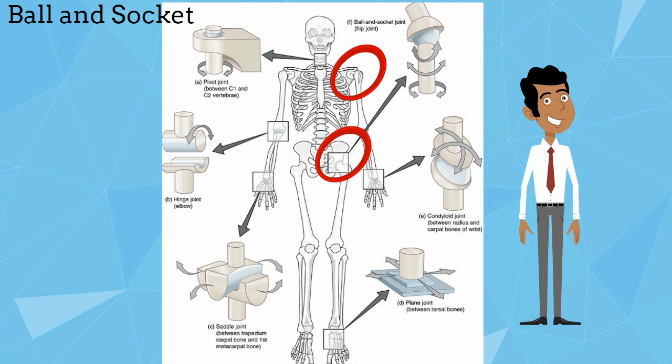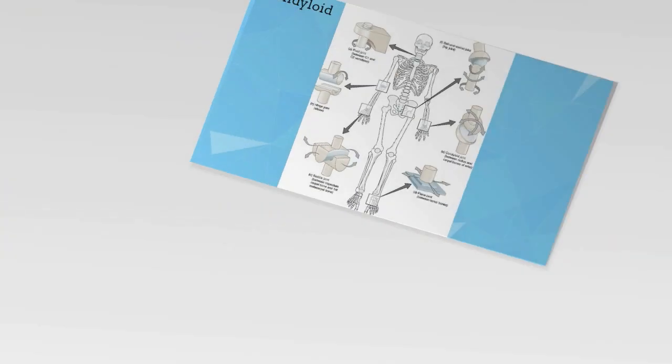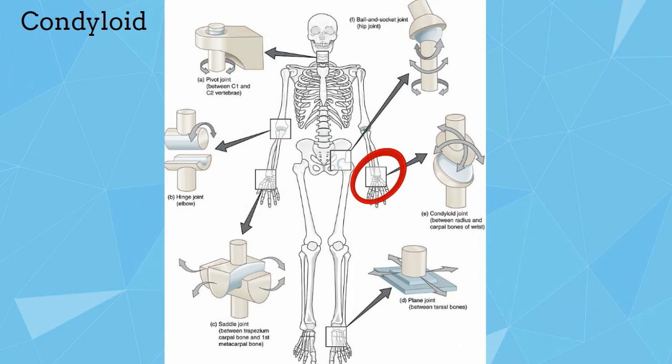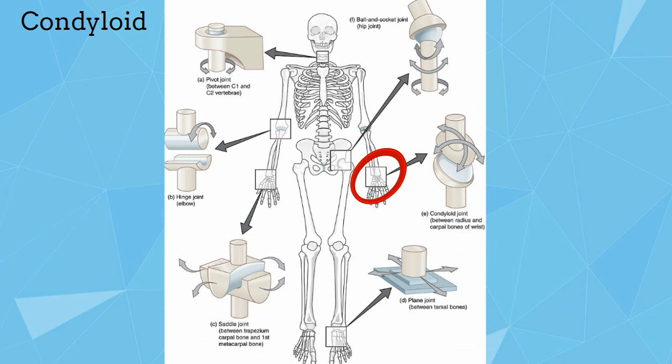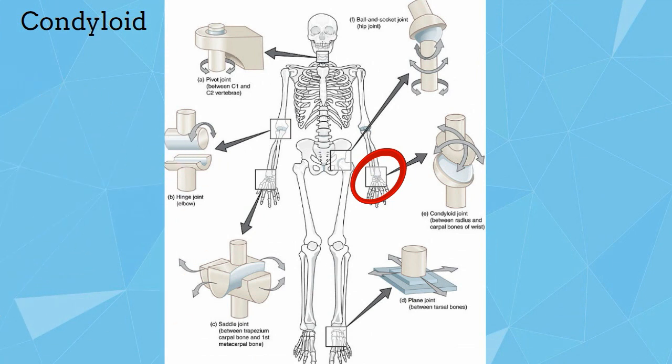Next is a condyloid joint. If you take your wrist, the bone with the radius in your wrist, you can see you can move your wrist back and forth and up and down. That is because of the condyloid joint.